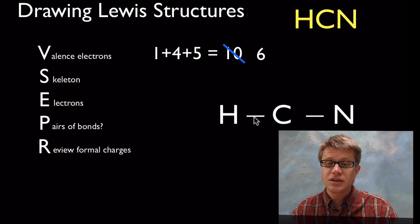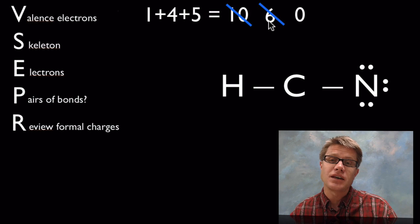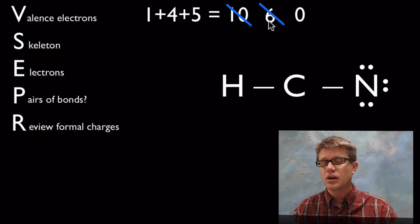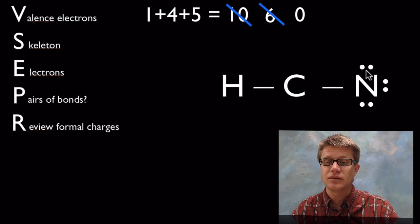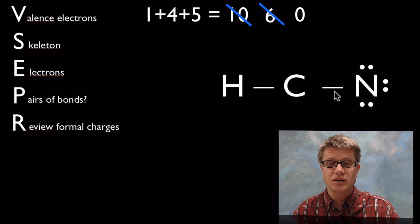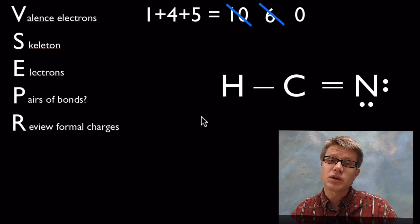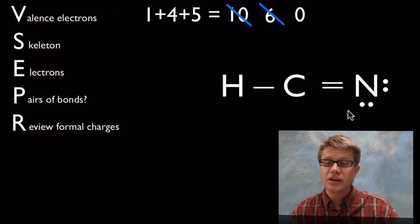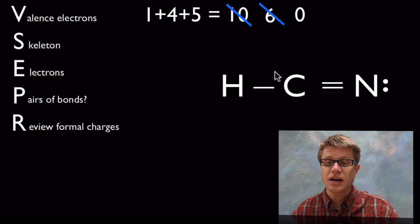Since those bonds are pairs of electrons, we've used four of those electrons, so now we're down to six. We add the remaining electrons to the most electronegative atom — nitrogen — to satisfy the octet rule. Nitrogen wants eight electrons: it has two, four, six, and it's sharing one, so it has two electrons here. Nitrogen is totally happy. But carbon is not, so we go to P — we look for pairs of bonds. We share one of nitrogen's pairs with carbon, and we can do that again. Now we've got a Lewis structure for hydrogen cyanide.